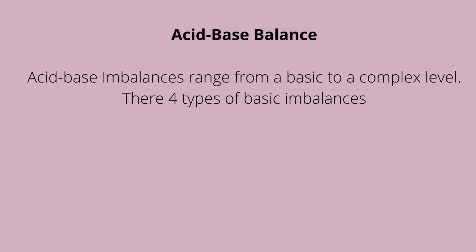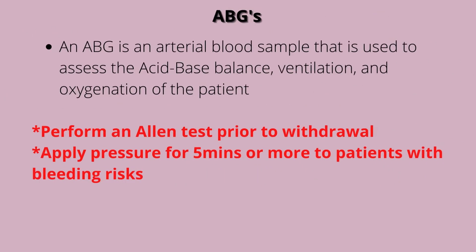So what is acid-base balance? Acid-base balance involves imbalances ranging from basic to a complex level, and there are four different types. Before we talk about these imbalances, let's talk about ABGs. An ABG is an arterial blood sample used to assess the acid-base balance, ventilation, and oxygenation of the patient. It's not a venous sample — it's normally drawn from a radial artery. Prior to this, an Allen test is performed to ensure adequate blood flow through the ulnar artery. Once you complete drawing the blood, you need to apply pressure on the artery, as arteries have higher pressure than veins. Hold pressure for at least five minutes, and if the patient is on anticoagulants — blood thinning agents — hold it longer because they are at risk for bleeding.